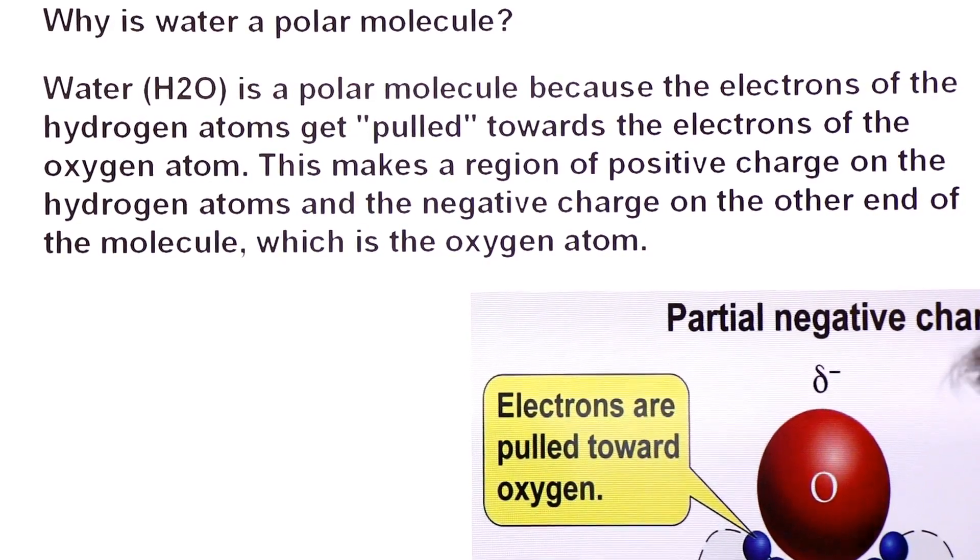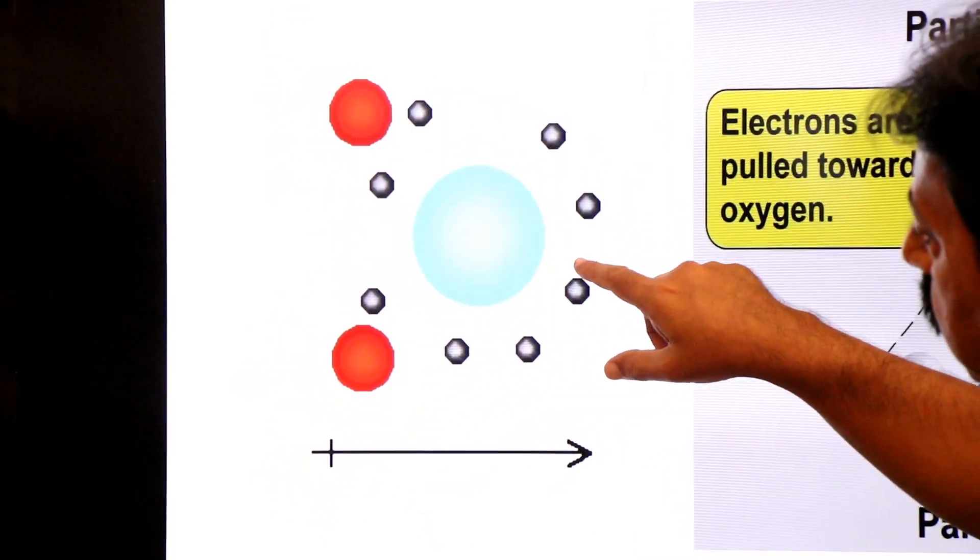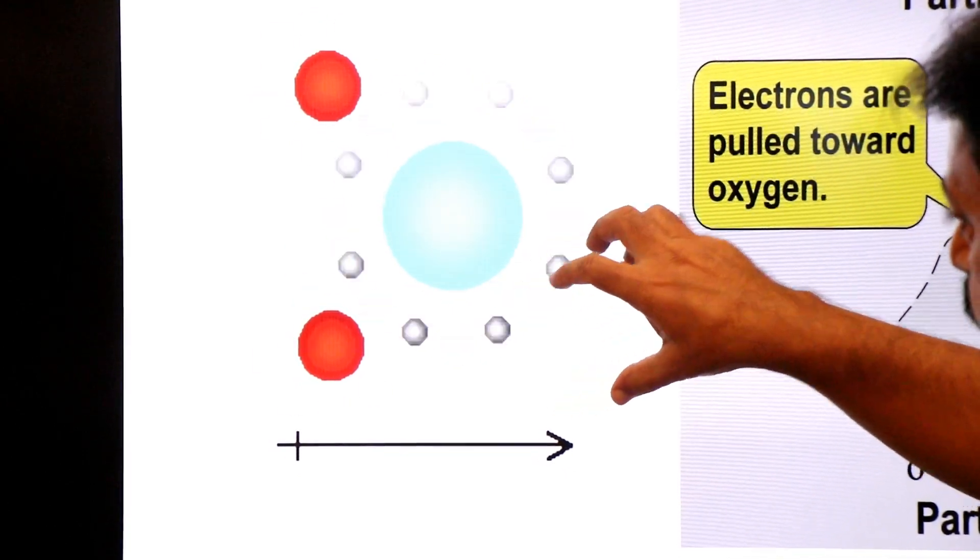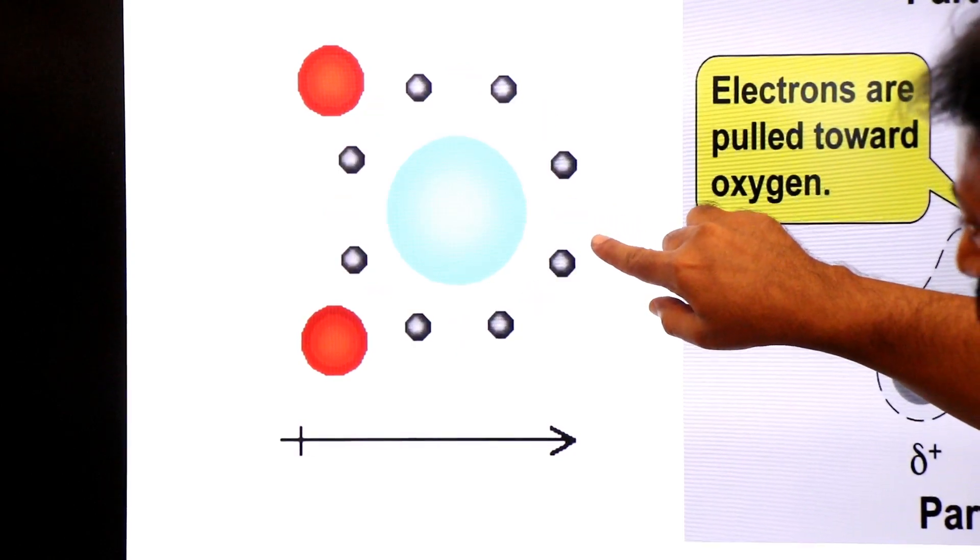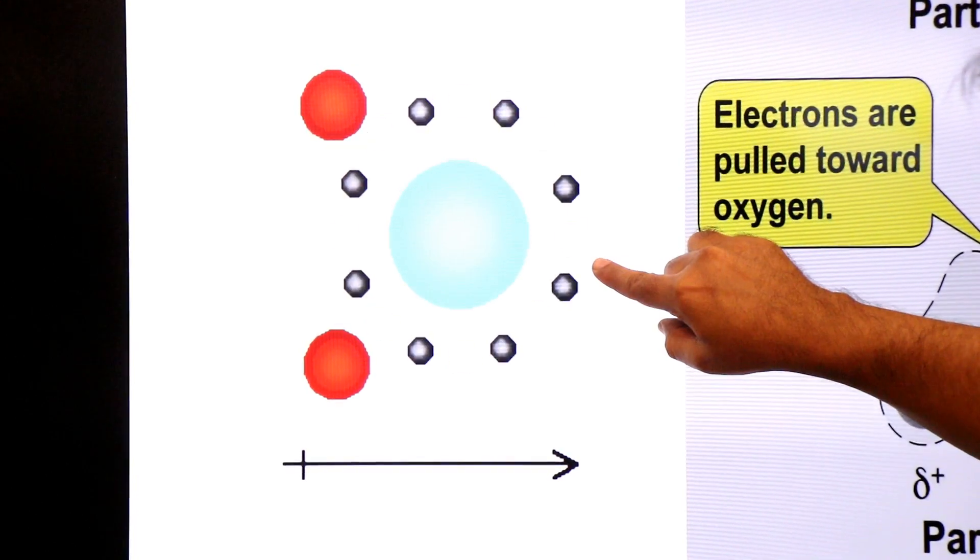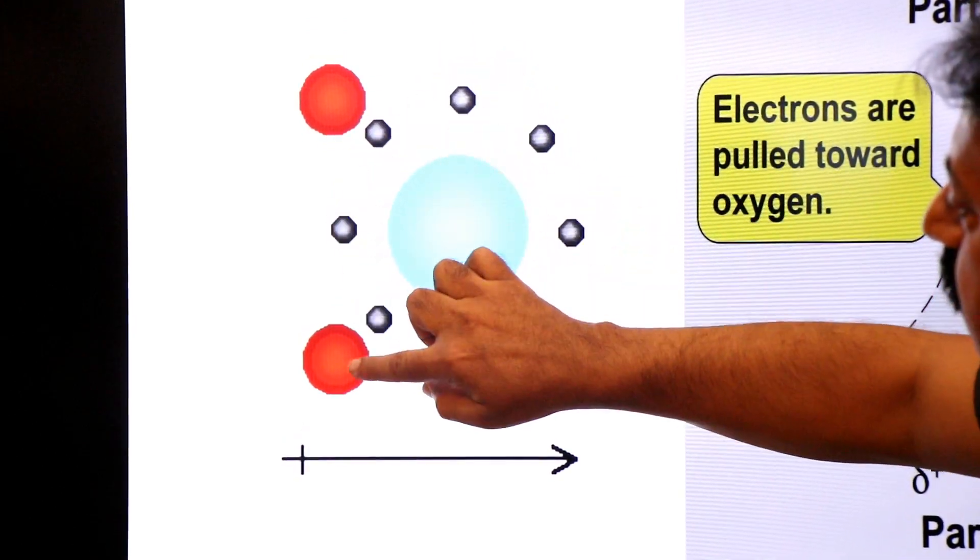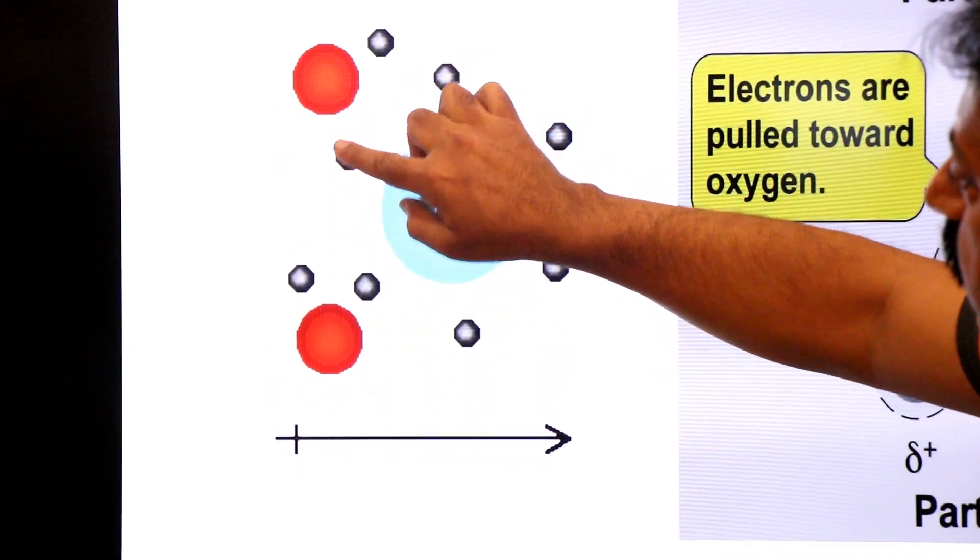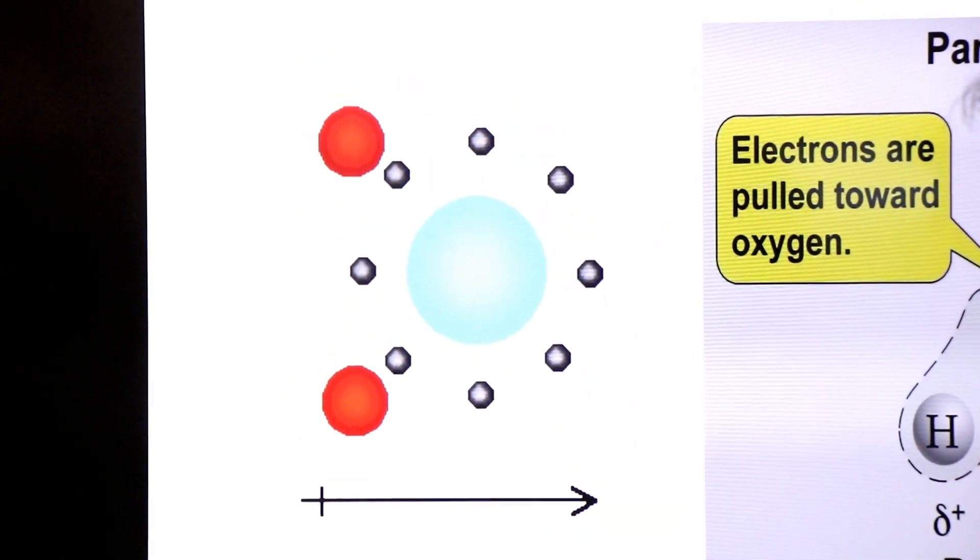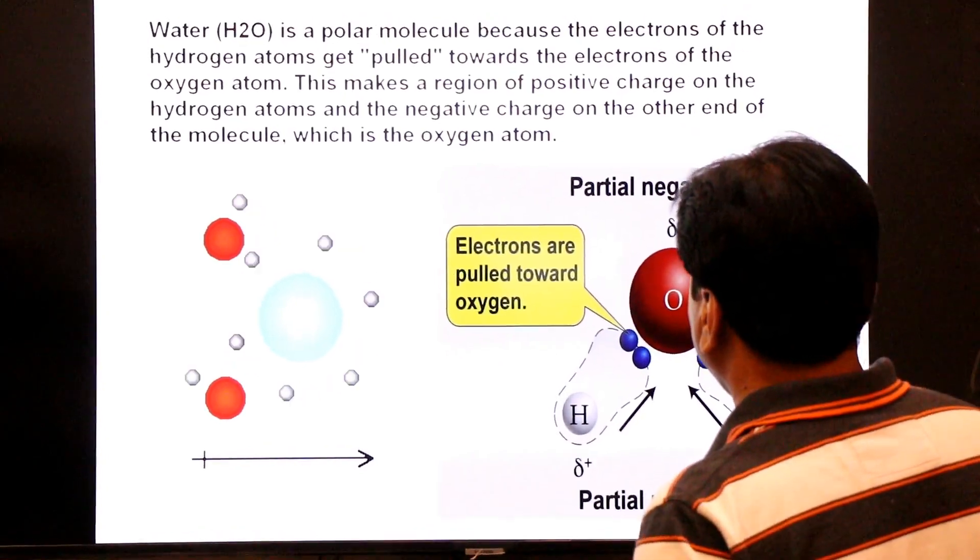Water H2O is a polar molecule because the electrons of the hydrogen atoms get pulled towards the electrons of oxygen atom. This makes a region of positive charge on hydrogen atoms and negative charge on the other end of the molecule, which is the oxygen atom. Yaha pe aap ek animation dekhiyega. Here you see the electrons spend more time over the oxygen, that is why oxygen carries slight negative charge. Toh yeh wajah hai jiski wajah se hum water ko polar molecule kehte hain.